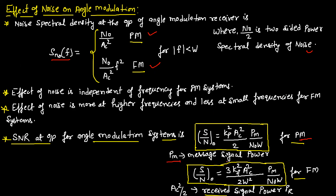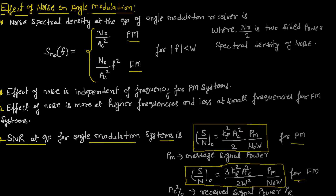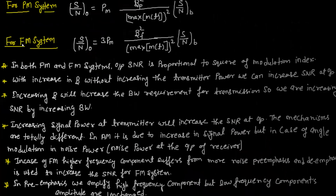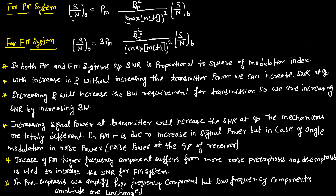SNR at the output of phase modulation equals Kp²·AC²·PM / (2·N0·W), where PM is the message signal power. SNR at the output of frequency modulation equals 3·Kf²·AC²·PM / (2·W²·N0·W). Here, AC²/2 is the received signal power PR. For the phase modulation system, SNR at output equals PM·βP² / (max of message signal)² × SNR_baseband.